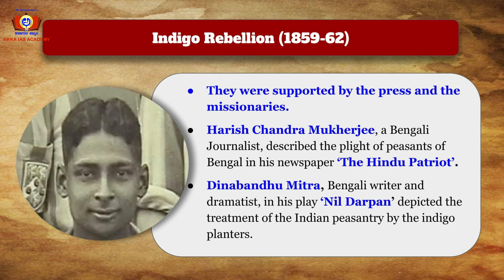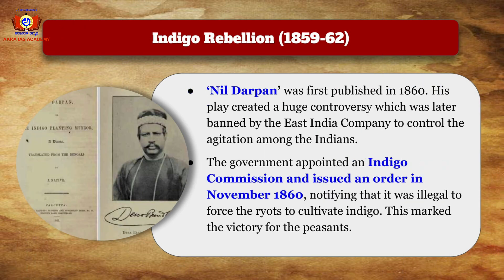Peasants involved in the Indigo Rebellion were supported by the press and missionaries. Harish Chandra Mukherjee, a Bengali journalist, described the plight of peasants in his newspaper The Hindu Patriot. Dinabandhu Mitra, a Bengali writer and dramatist, depicted the treatment of Indian peasantry by indigo planters in his play Neel Darpan, first published in 1860. The government appointed an Indigo Commission and issued an order in November 1860 declaring it illegal to force the raots to cultivate indigo, marking the victory of the peasants.